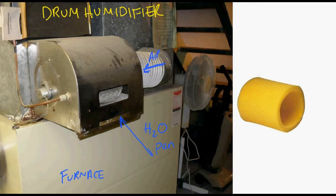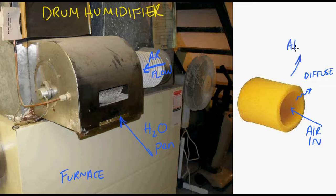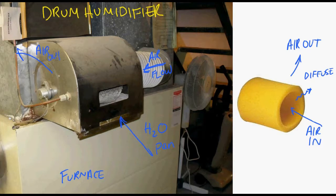Air comes in through this duct into the center of the drum. If you look on the right here, here's that drum. It's like a big cylindrical sponge. Air goes in, diffuses through that sponge to the outside, and then proceeds on to the next duct. So the air goes out.